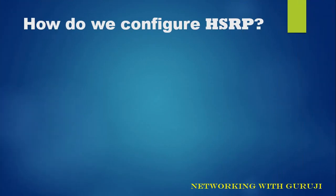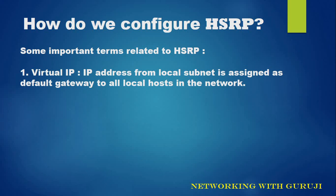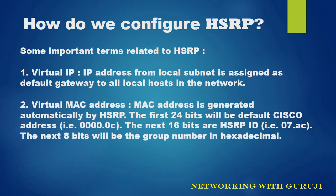How do we configure HSRP? Some important terms related to HSRP. First, Virtual IP: an IP address from the local subnet is assigned as the default gateway to all local hosts in the network. Second, Virtual MAC address: the MAC address is generated automatically by HSRP. The first 24 bits will be the default Cisco address, the next 16 bits are the HSRP ID, and the next 8 bits will be the group number in hexadecimal.